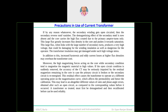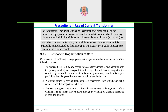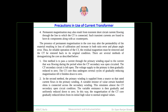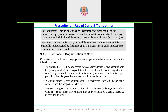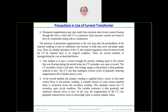If you keep the CT secondary open, there is no way to return the back EMF, which will increase the flux densities and cause overheating of the CT core. The core material of a current transformer may undergo permanent magnetization due to reasons already discussed. Please go through the last two or three slides carefully. With this, I am closing the recording of this lecture, and in the next lecture we will discuss further topics.